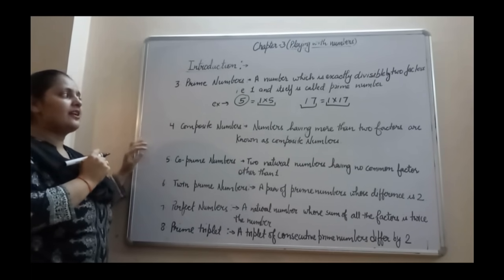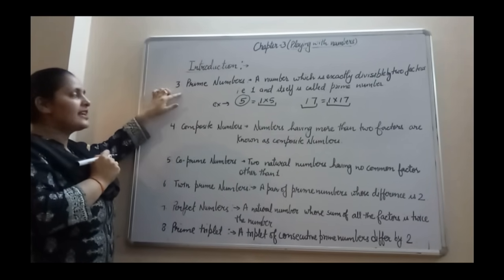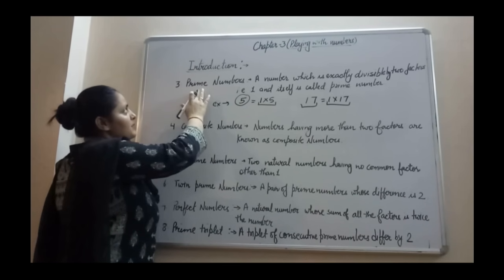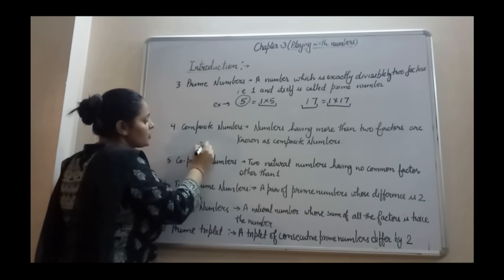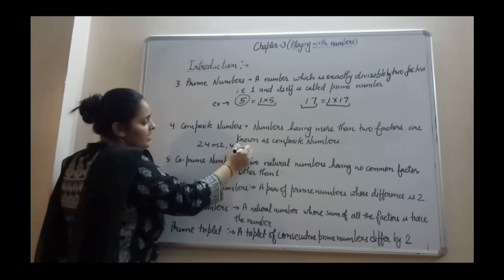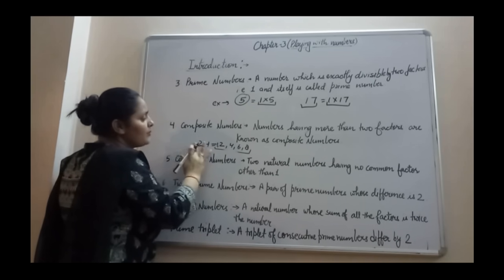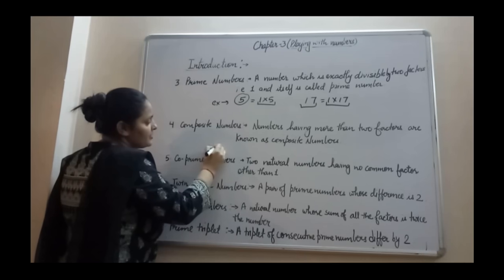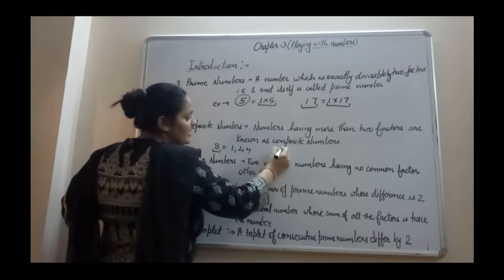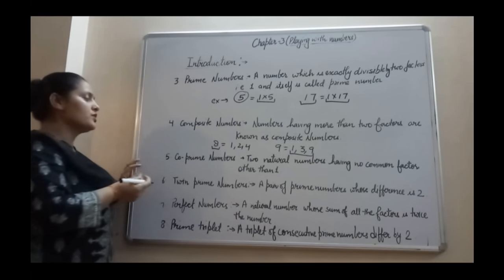The next type is composite numbers. A number having more than two factors is known as a composite number, or numbers except prime numbers are called composite numbers. For example, 24 has factors 1, 2, 4, 6, 8 and more — so 24 is a composite number. Or take 8: its factors are 1, 2, and 4, so 8 is also composite. And 9 has factors 1, 3, and 9, so 9 is also a composite number.